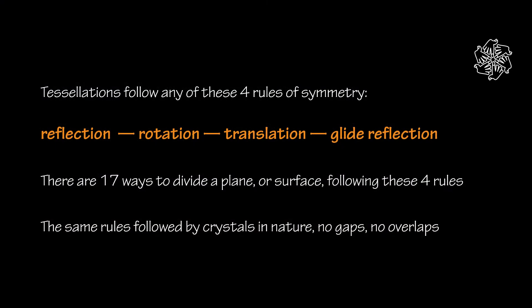Symmetry is more than just mirrors. Tessellations follow any of these four rules of symmetry: reflection, rotation, translation, and glide reflection. There are 17 ways to divide a plane or surface following these four rules in different combinations — the same rules followed by crystals in nature. No gaps, no overlaps.